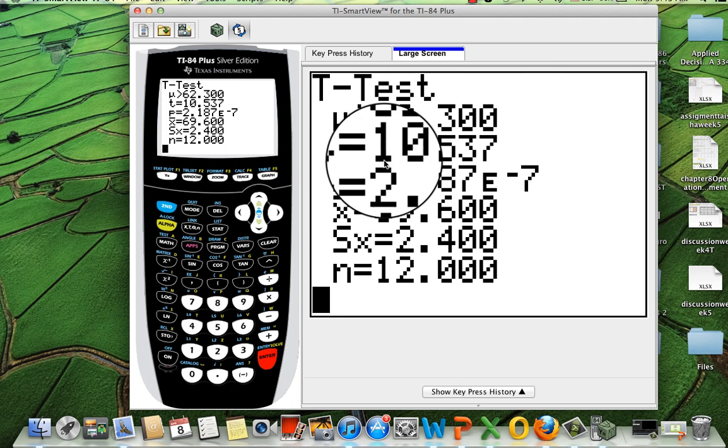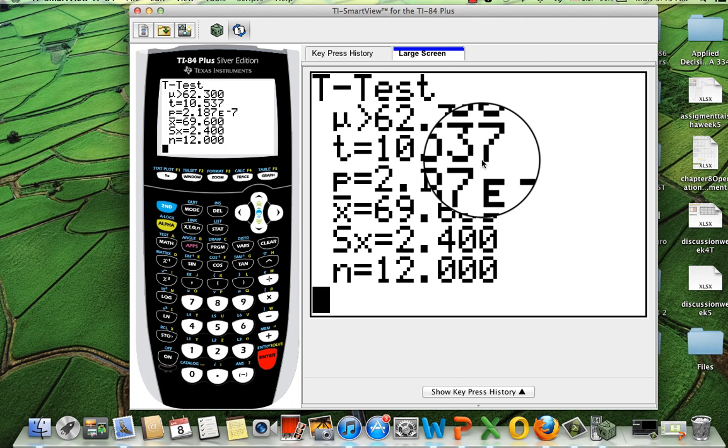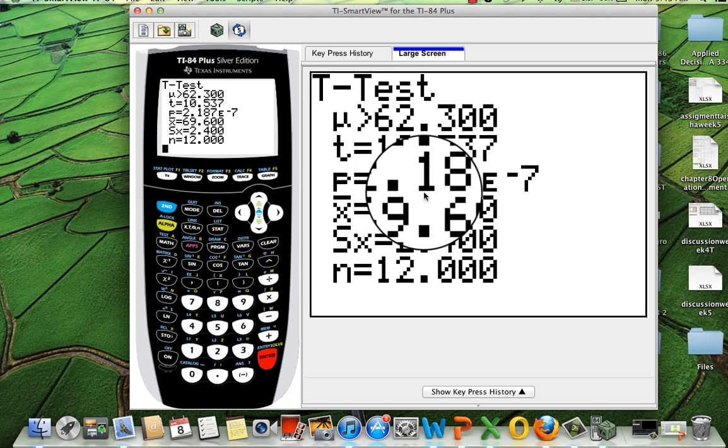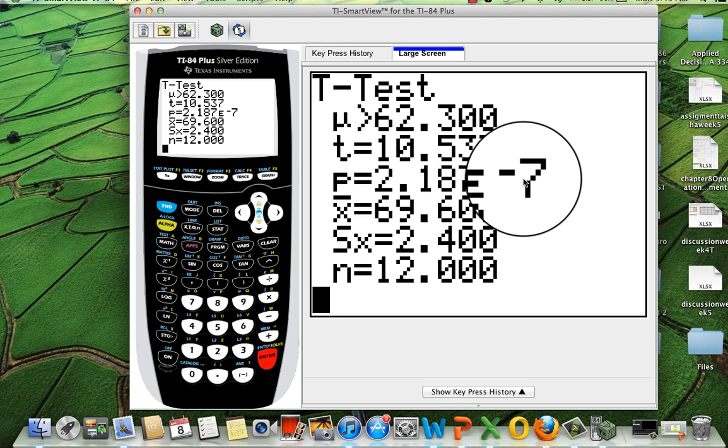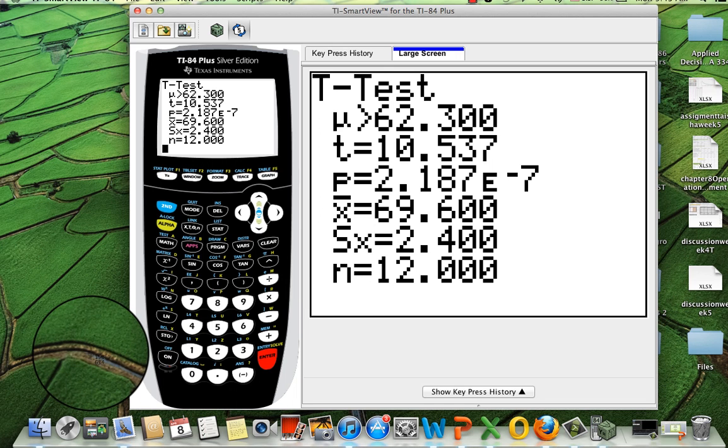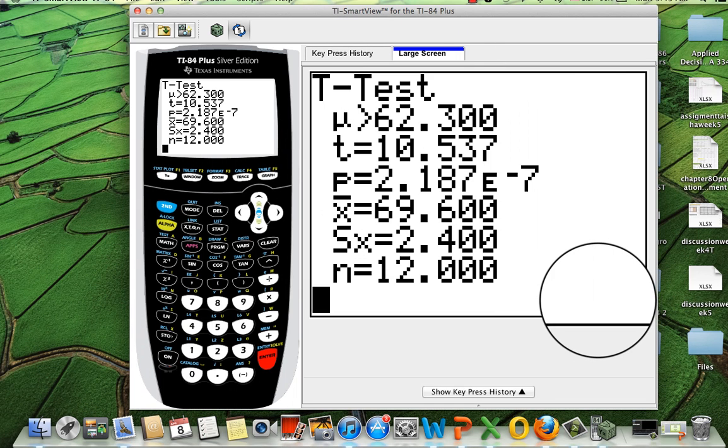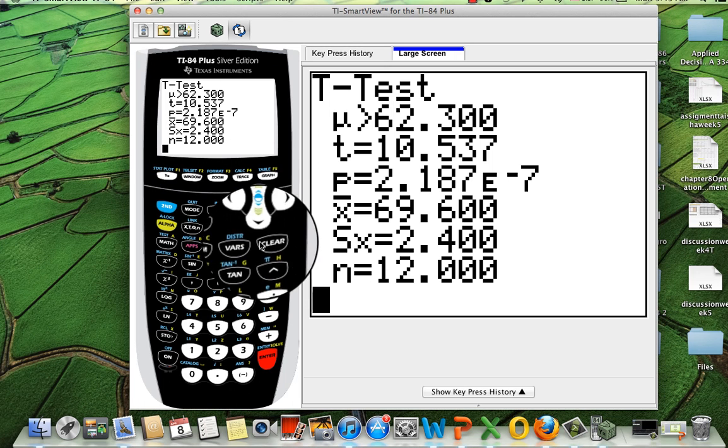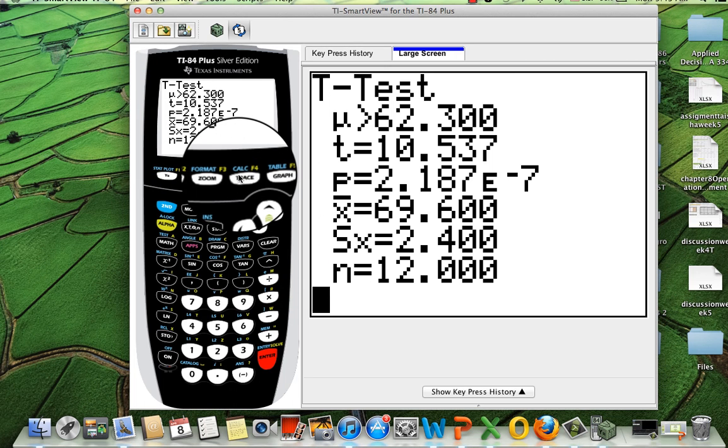Perfect. Look, I get the t-value, which is, let's write it down, 10.537. I get the p-value. The p-value is 2.187 times 10 to the negative 7. That means that this guy is extremely small. Very, very, very small. So with this information, we're gonna go ahead and go back to our problem. Let me do a screenshot. And we're gonna put this in our results and analyze it.